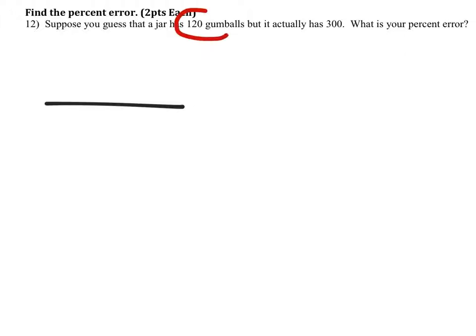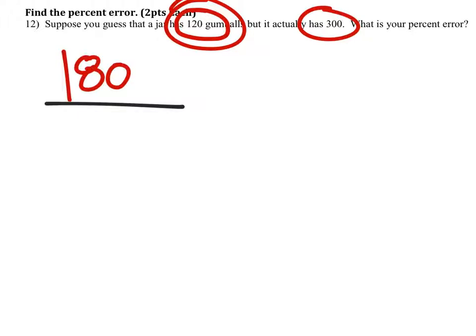So, if there were actually 300 gumballs, but we guessed 120, then how far off were we? 180 gumballs is how far off we were.